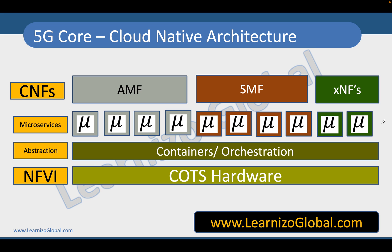Now how do we see this in real environments? The hardware layer is typically the COTS hardware referred to as NFVI — network function virtualization infrastructure. On top of that, we run containers and container orchestration mechanisms, which can be something like Docker or Kubernetes. In these containers, we host microservices. The monolithic software of network functions is broken down into multiple microservices, which are hosted in containerized environments. A collection of multiple microservices performing a function is called a network function — typically referred to as a CNF, or cloud-native network function.